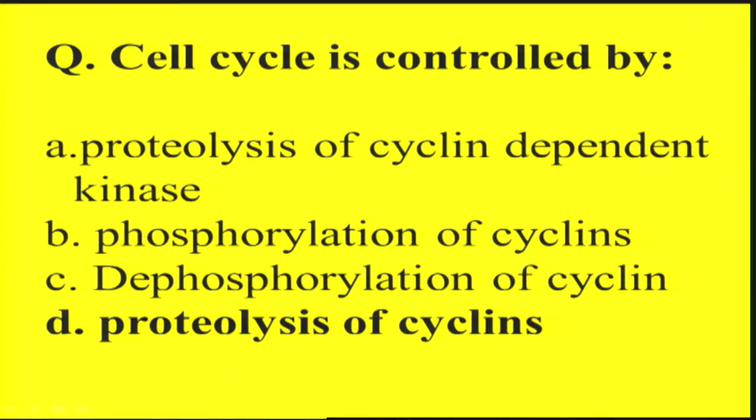We have discussed that the cell cycle is governed by certain proteins present in the cytoplasm known as cyclins. Their levels increase and fall in a cyclic fashion, which is why they are called cyclins. Cyclins exert their effect via cyclin-dependent kinases, whose activity depends on cyclin concentration. The cyclin along with cyclin-dependent kinase is known as MPF, or maturation promotion factors.